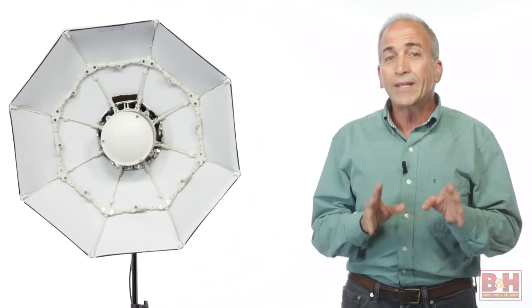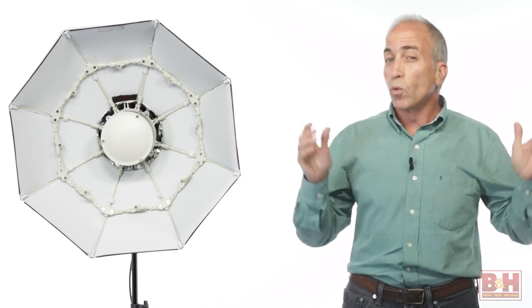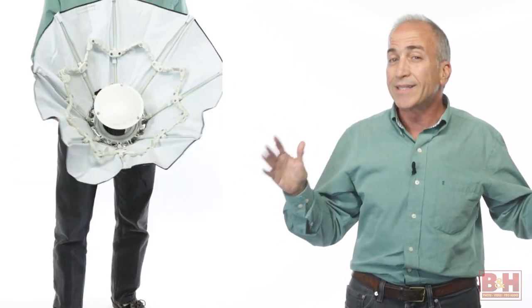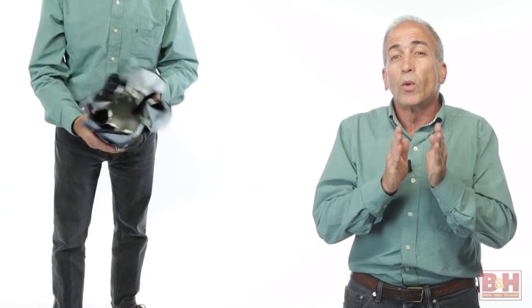In a bid to make beauty dishes easy to pack up and travel with, Fotix has introduced the Luna Folding Beauty Dish, a real deal light reflector that opens up to a full 27 and a half inches on set, yet folds up like an umbrella when not in use.